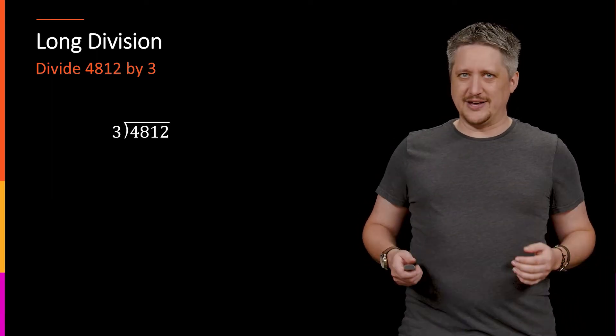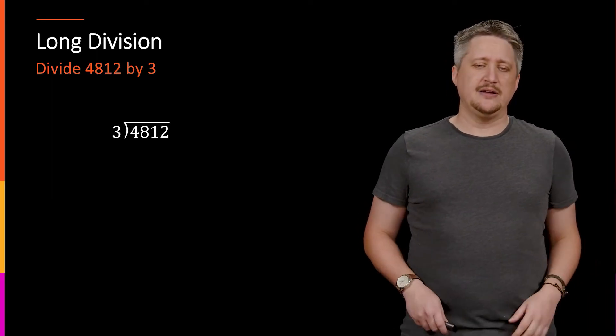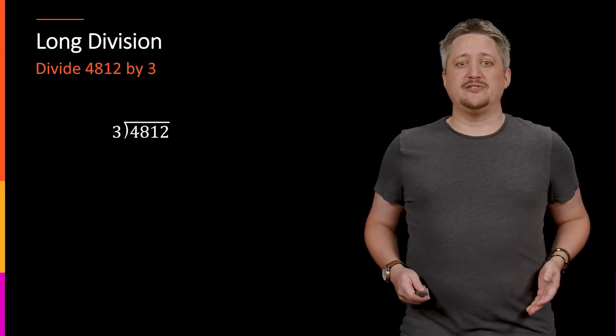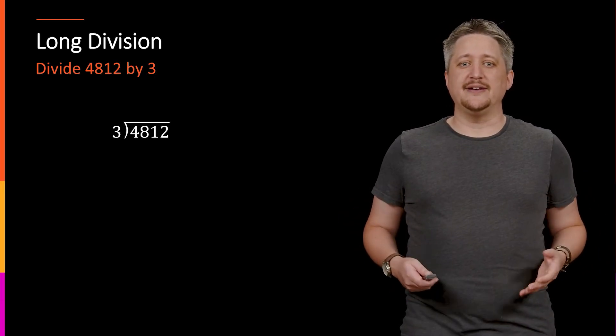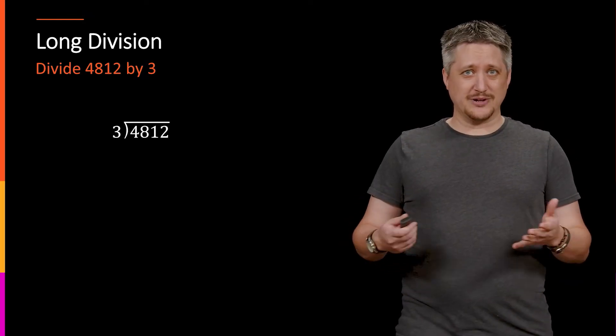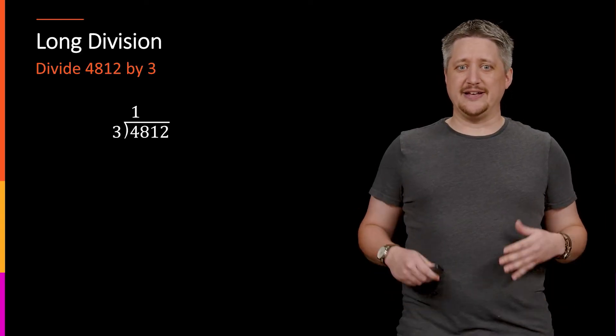So, let's say we are dividing 4812 by three. So, we go through this one digit at a time. We look at four and we say, okay, how many times can three go into four? We might know or guess or whatever. We decide the answer is one.